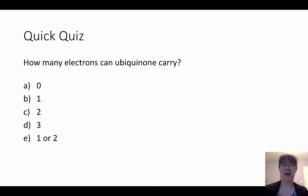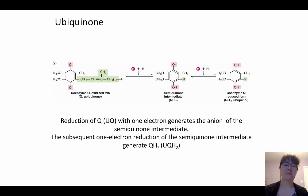This is one of my favorite quick quizzes, which is how many electrons can ubiquinone carry. My favorite answer to this one is that it's complicated. This is again just to remind you that oftentimes we're going to talk about coenzyme Q and ubiquinone that it can carry two, but it is going to do them one at a time. So it is going to have multiple oxidation states.